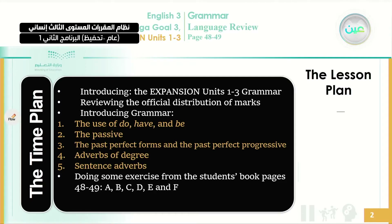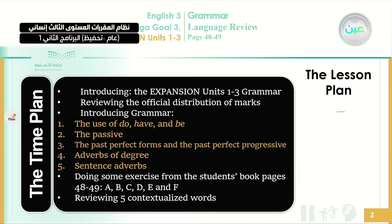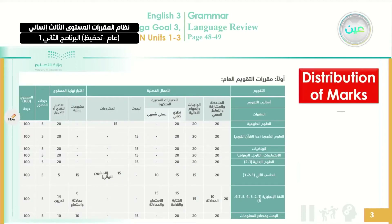After that, we're going to do some exercises from the student's book on page 48 and 49 — exercises A, B, C, D, E, and F. And at the end of the class, we're going to review five contextualized words.